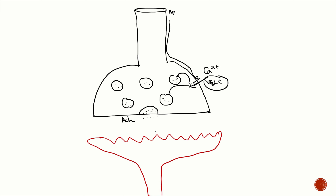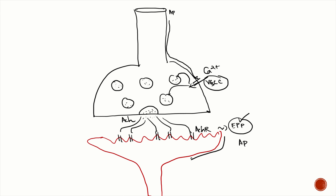At the postsynaptic muscle membrane, acetylcholine binds to acetylcholine receptors, giving rise to a local potential known as the end-plate potential. When enough receptors are stimulated, these end-plate potentials sum together to form an action potential, which propagates along the postsynaptic muscle membrane and eventually causes skeletal muscle contraction.